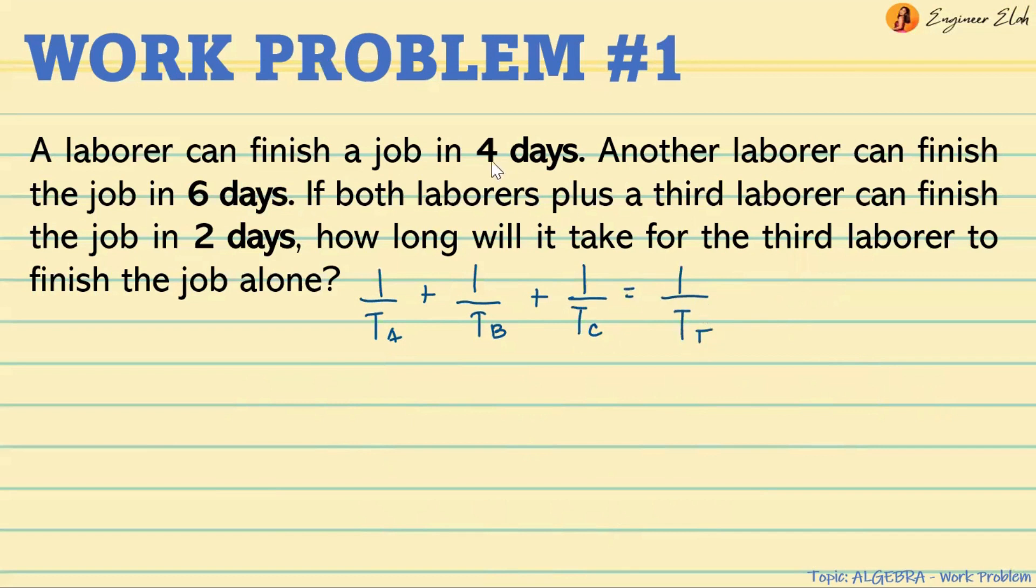So we're given the times that it took them, except for laborer C, the third laborer. But we're given their total time. So that will be 1 over 4 days plus 1 over 6 days plus 1 over Tc equals 1 over 2 days.